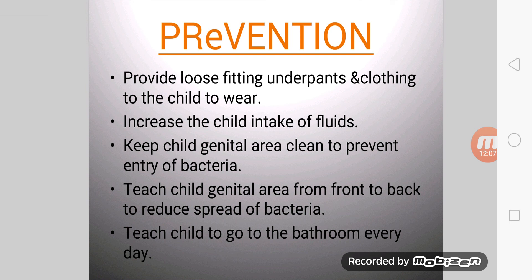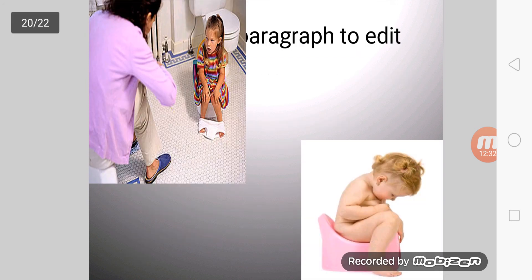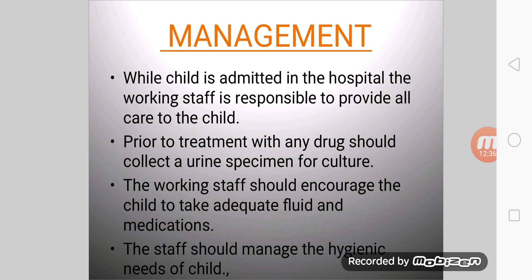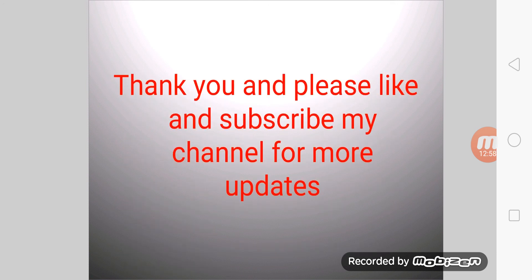Prevention and nursing care: provide loose-fitting underpants and clothing to the child. Increase the child's intake of fluids. Keep the child's genital area clean to prevent entry of bacteria — teach the child to wipe from front to back. Teach the child to go to the bathroom regularly. While the child is admitted in the hospital, nursing staff should collect a urine specimen for culture prior to starting antibiotics, encourage adequate fluid intake and medication, and manage the hygienic needs of the child. Thank you so much — please like and subscribe to my channel.